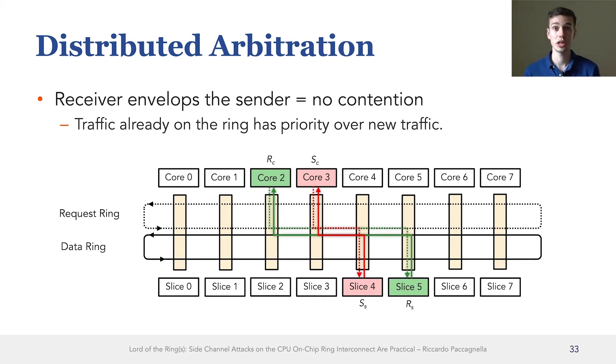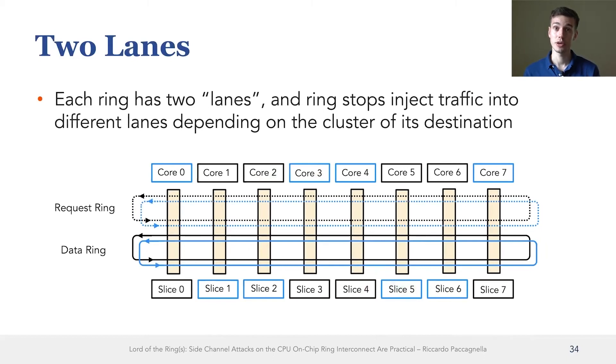Finally, we saw that even with all the conditions discussed so far, it was not always the case that there was contention. And the reason for this is that each ring is actually divided into two lanes.